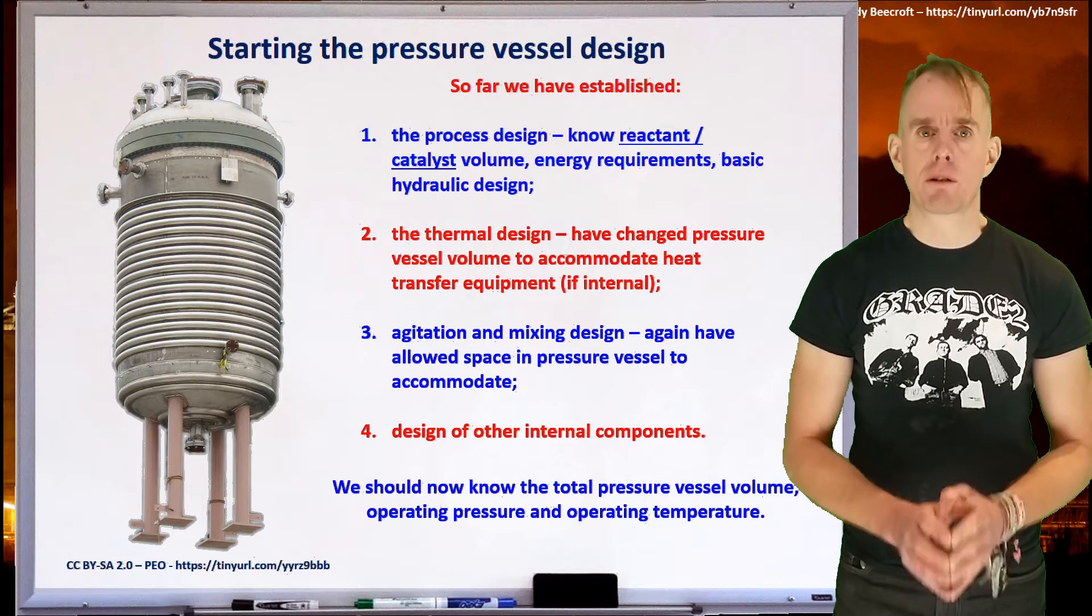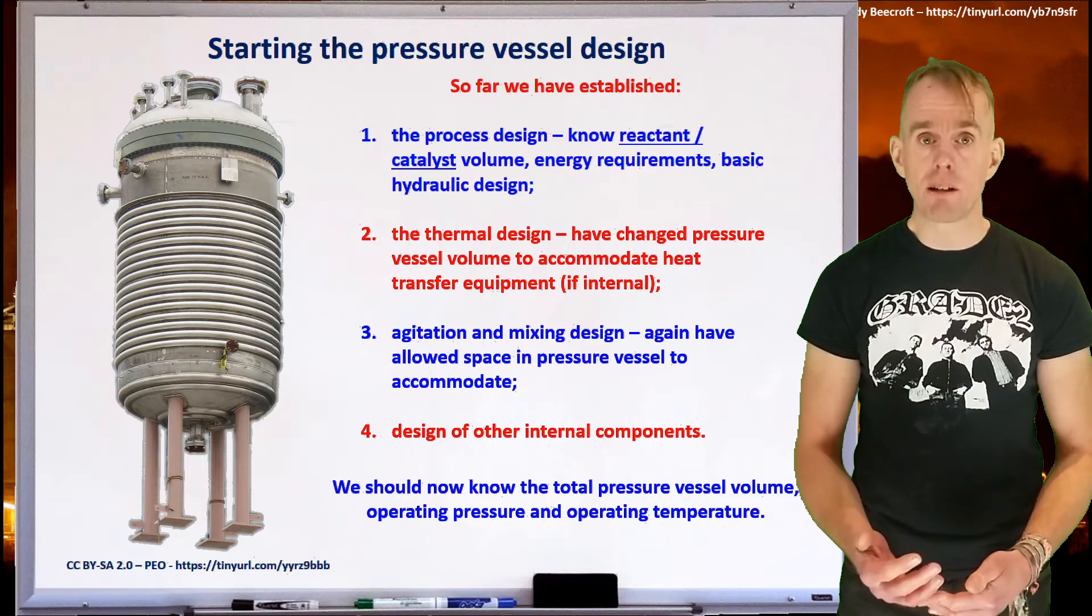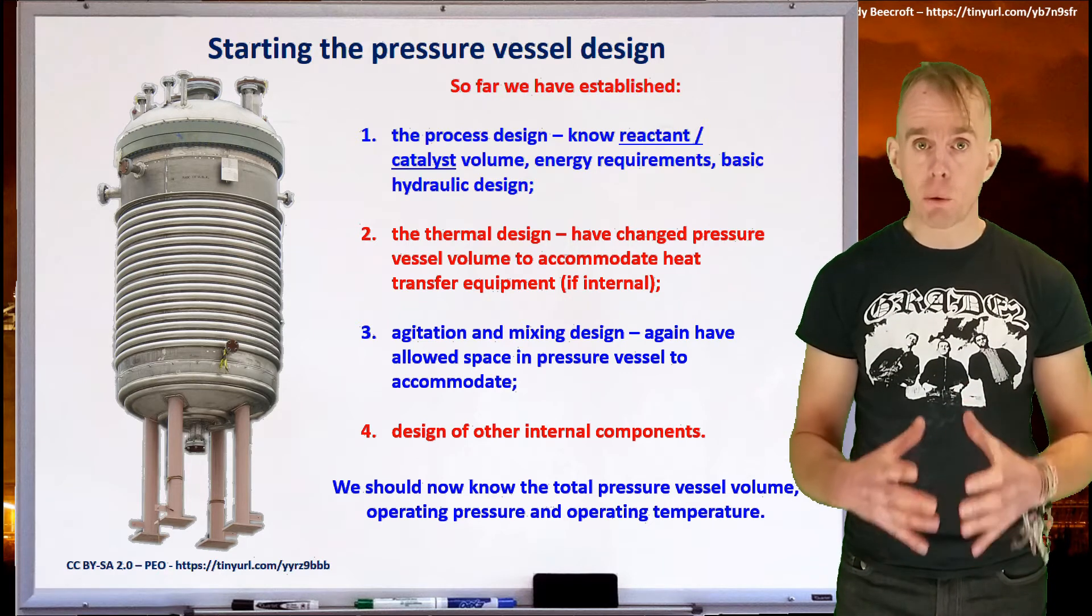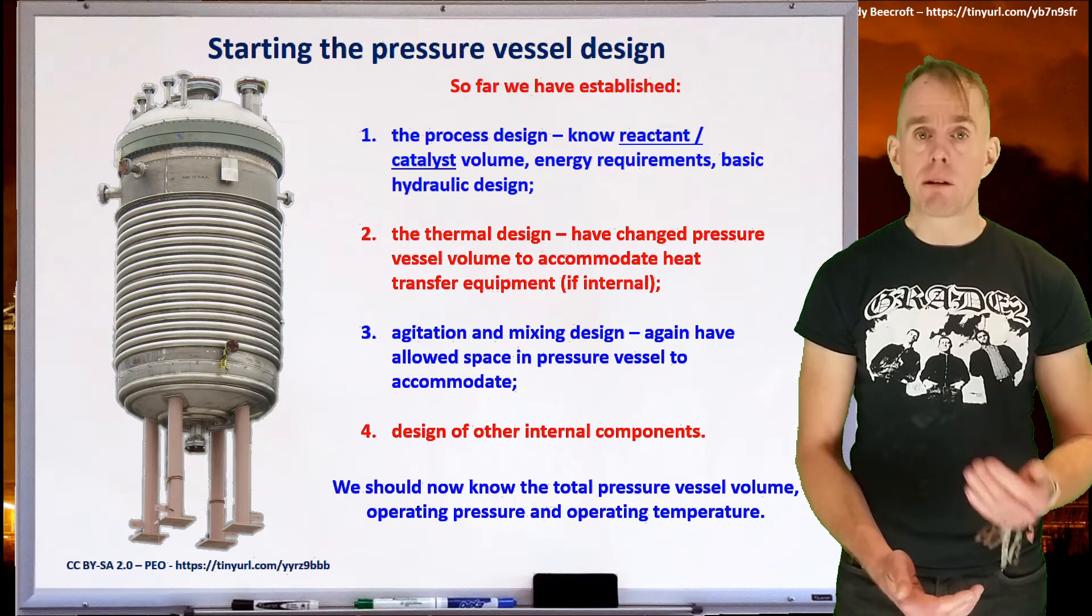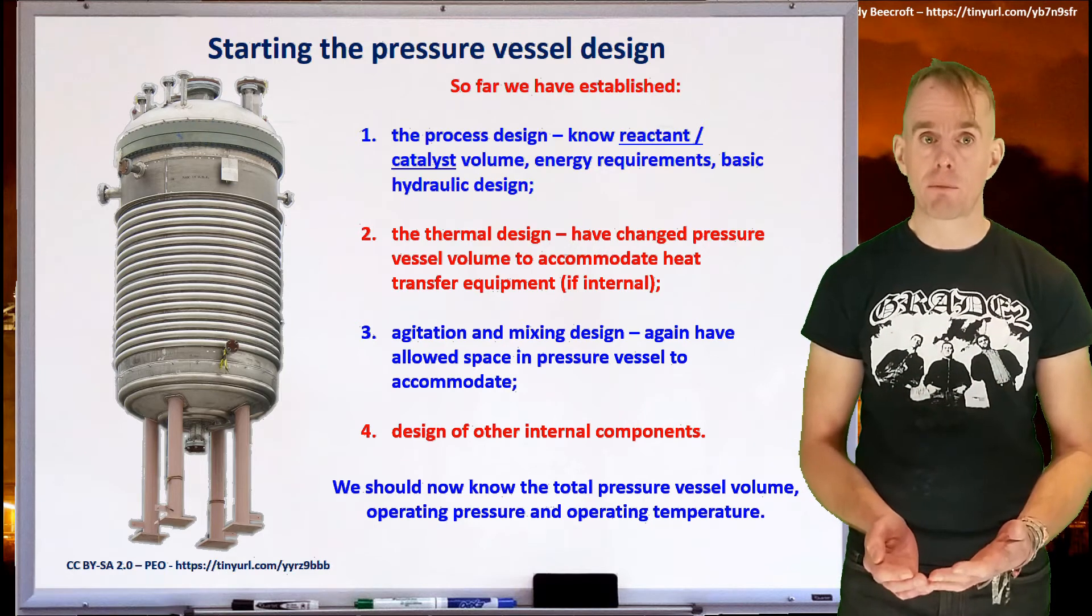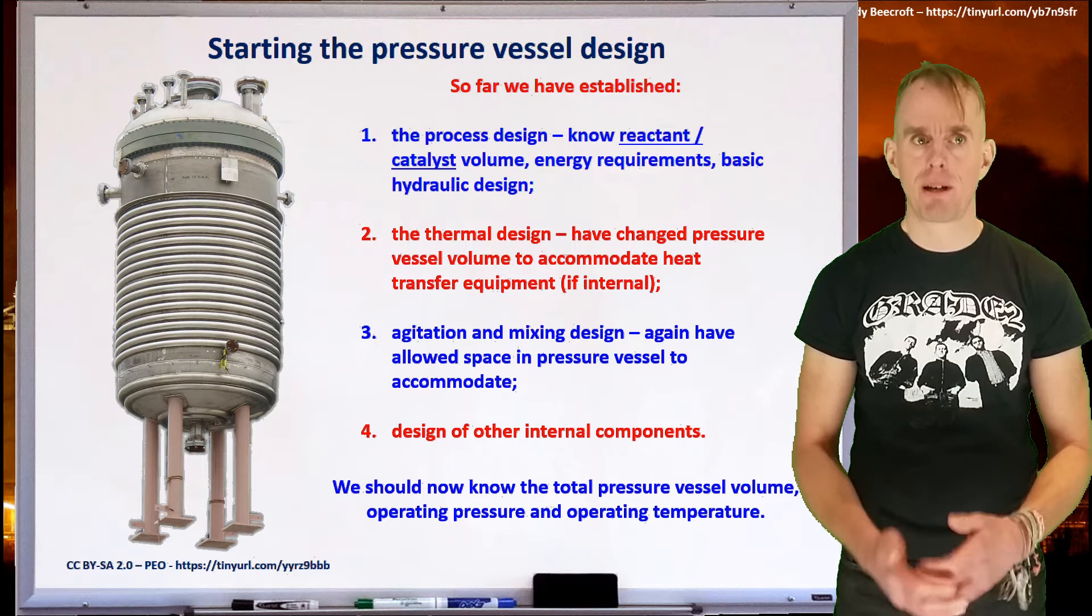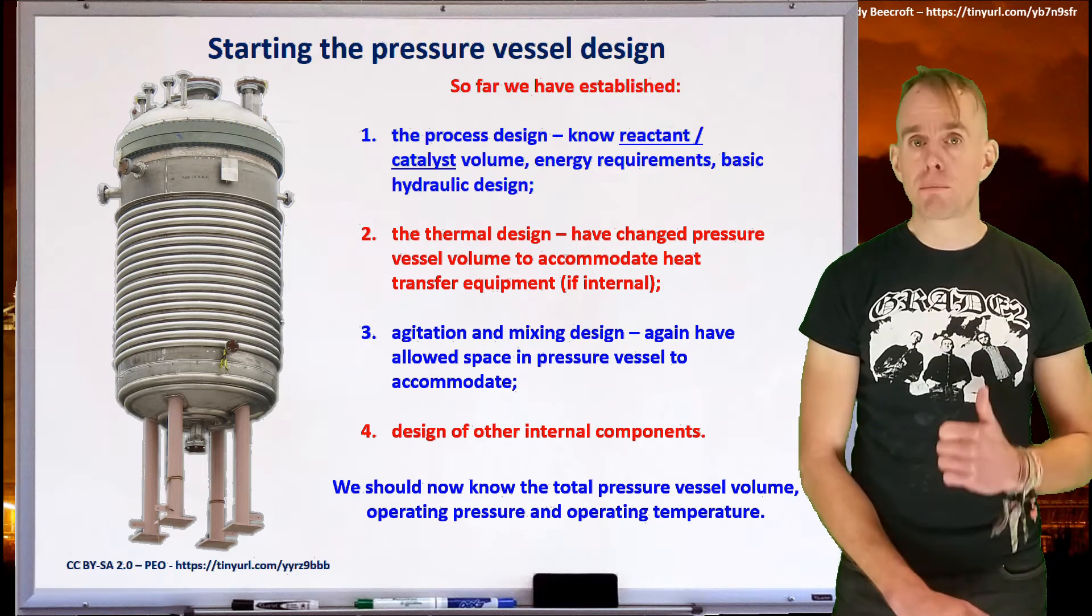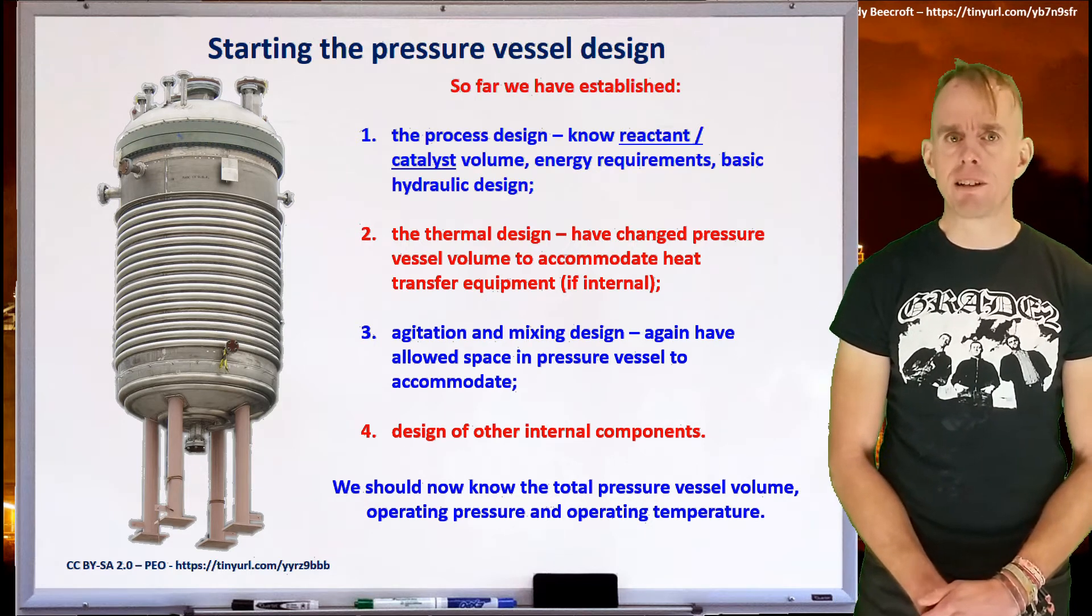We've also thought about additional components. If we've got agitators, we're going to need bearings and seals. If we've got heat exchange equipment, we're going to need some kind of mechanical support for those, likewise for catalyst beds. And if we've got a multi-phase system that involves a gas-liquid reaction, we're going to have some kind of gas sparging equipment. All these items of equipment, of course, take up space. So by the end of this design process, we should know the total pressure vessel volume, its operating pressure, and its operating temperature.